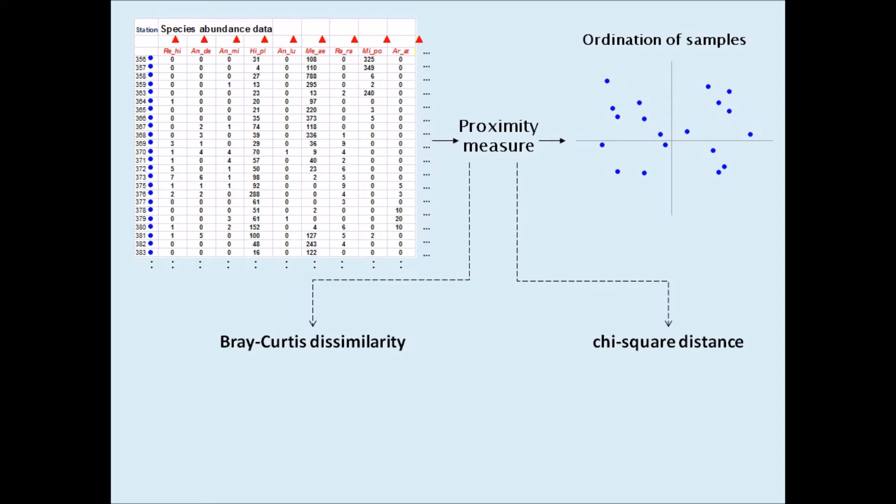The chi-square distance, which underlies correspondence analysis and canonical correspondence analysis, or CCA, operates on relative species abundances or relative biomass, etc. Thus, this distance analyzes what can be called pure shape differences between samples, that is compositional differences, where total abundance has been eliminated from each sample.